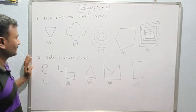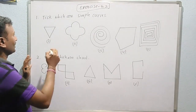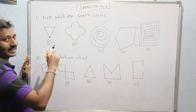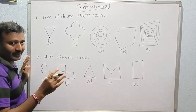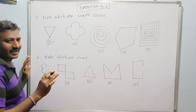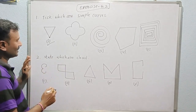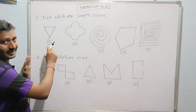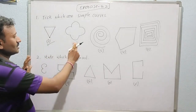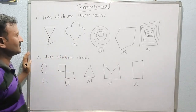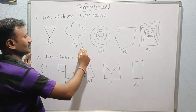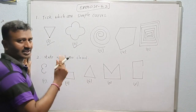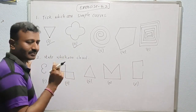That figure should be closed first. Is it closed? Yes. Is it intersecting anywhere? Not intersecting anywhere — intersecting would look like this, but it does not intersect. So let us see figure 2. This is also closed and not intersecting, that is why it is called a simple curve.